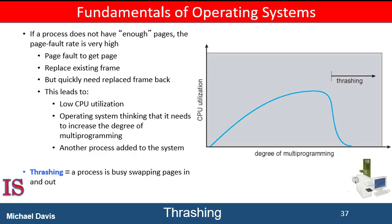However, the problem is not entirely solved. If processes are thrashing, they will be in the queue for the paging device most of the time. The average service time for a page fault will increase because of the longer average queue for the paging device. As a result, the effective access time will increase even for a process that is not thrashing.